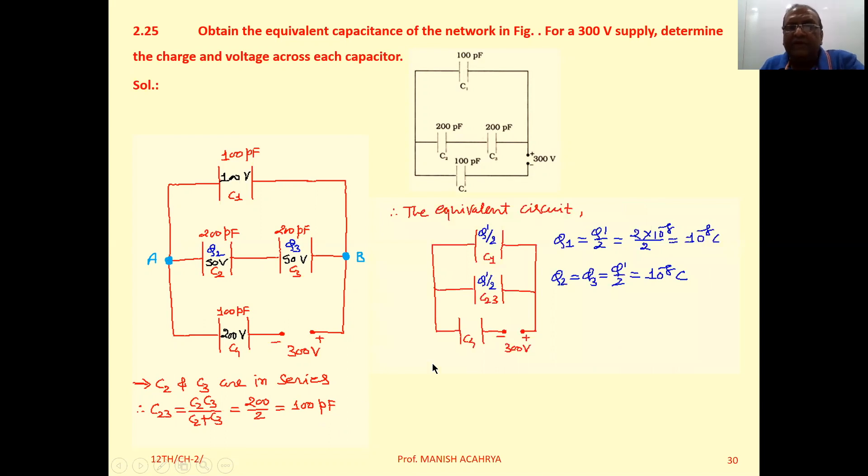Now the equivalent circuit between A and B, C2 and C3 are removed and only one capacitor C23 is connected. Now you can see across A, B, capacitor C1 and C23 are parallel.